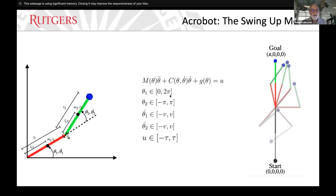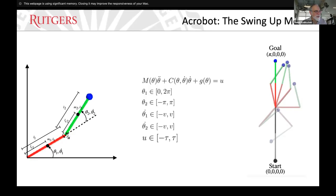To clarify: the control vector u has only one non-zero component — the second component is not zero. There is only torque at the elbow, not at the shoulder.